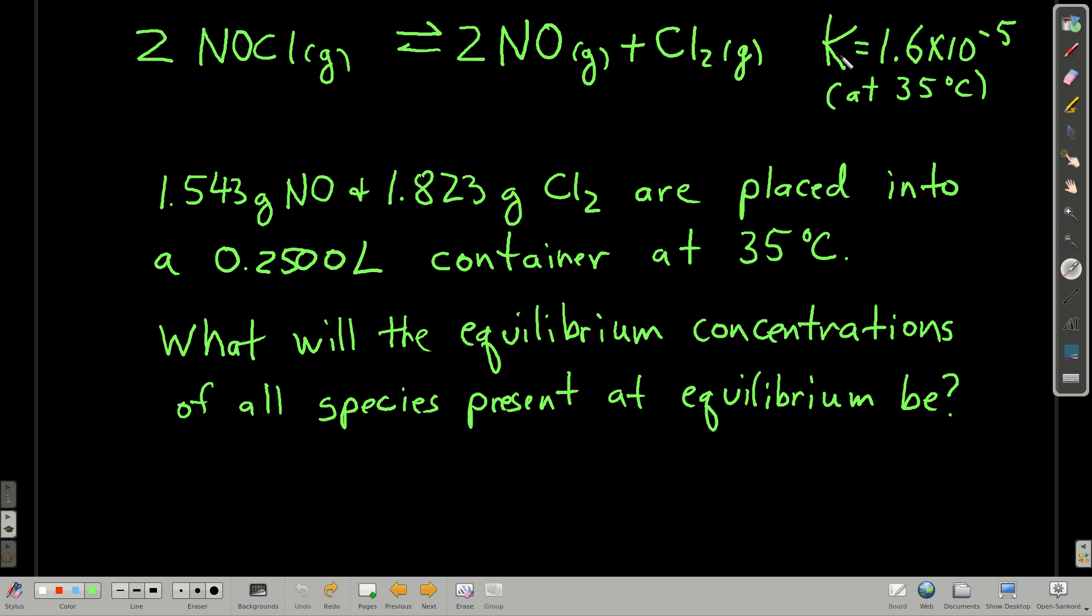Well, one thing that when we first look at this, this is a pretty small equilibrium constant. I mean, you'll see it's a lot smaller, 10 to the minus 30th, 10 to the minus 50th, but still, that's significantly smaller than 0.001. So what that means is that at equilibrium, there's going to be very little of these present and mostly this.